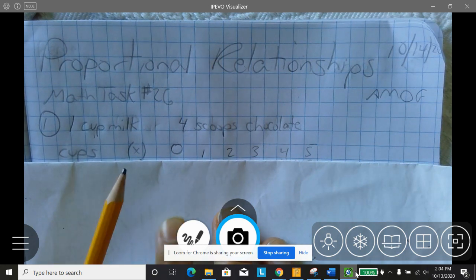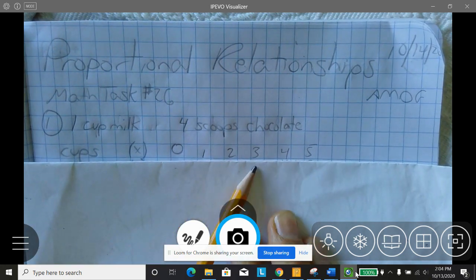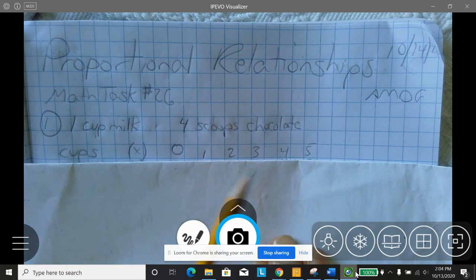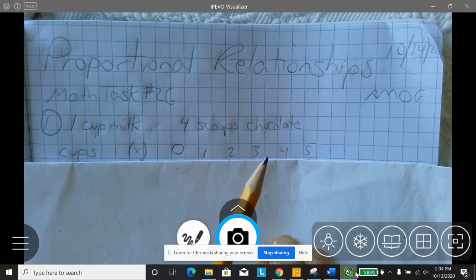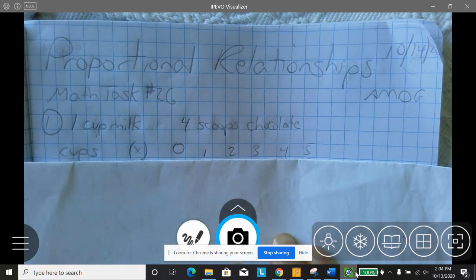So for cups of milk, we're going to put 0, 1, 2, 3, 4, 5. We're going to make a table because we don't know how many cups Nana might want. And these are all the different possibilities of cups that Nana might like.